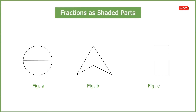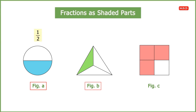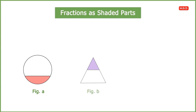Now look at the figures on your screen. Each figure represents one whole, and the shaded part represents a fraction. In figure A, the shaded part is 1 by 2, or half. In figure B, the shaded part is 1 by 3, or one-third. In figure C, the shaded part is 3 by 4, or three-fourths.